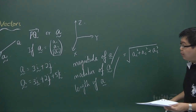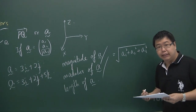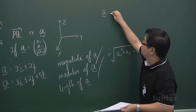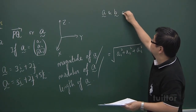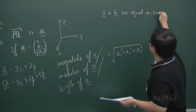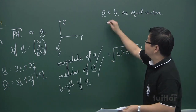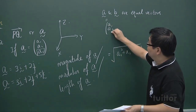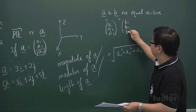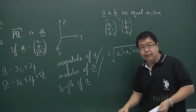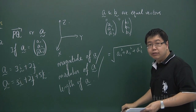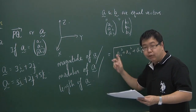Next is the concept of equal vectors. When we say two vectors A and B are equal, and A has components A1, A2, A3 while B has components B1, B2, B3, it means A1 equals B1, A2 equals B2, and A3 equals B3. Every corresponding component must be equal.